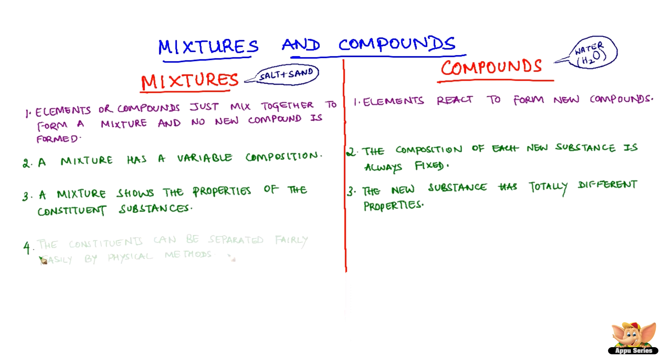In the case of a mixture, the constituents can be separated fairly easily by physical methods like handpicking, sieving, or filtration.